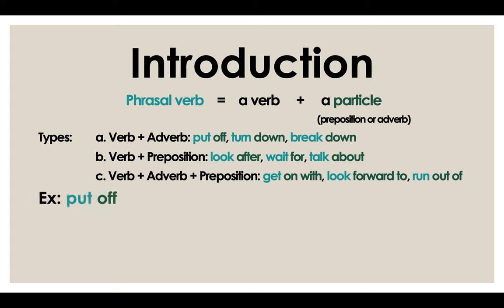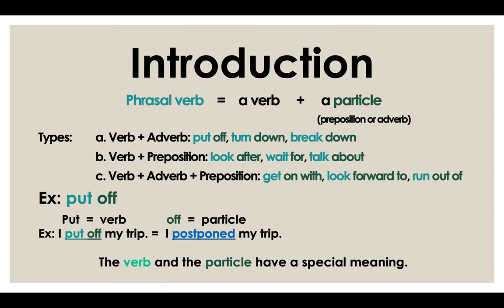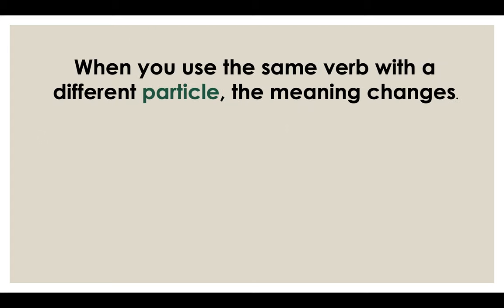Let's take a look at the example put off. So put is the verb, off is the particle — in this case, it's an adverb. Example: I put off my trip. It is the same as saying I postponed my trip. The verb and the particle have a special meaning, of course. When you use the same verb with a different particle, the meaning changes.